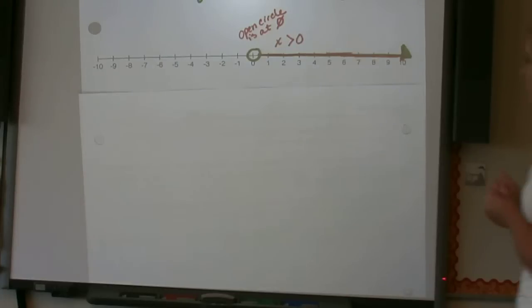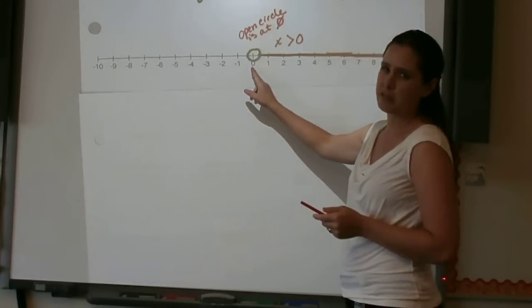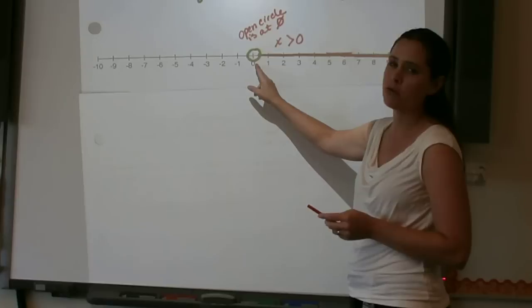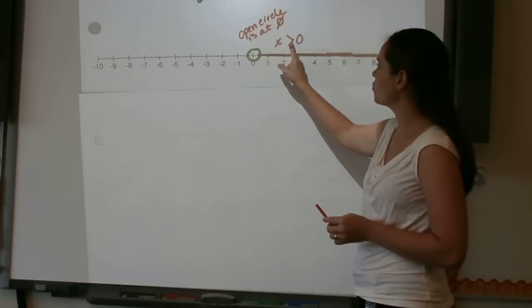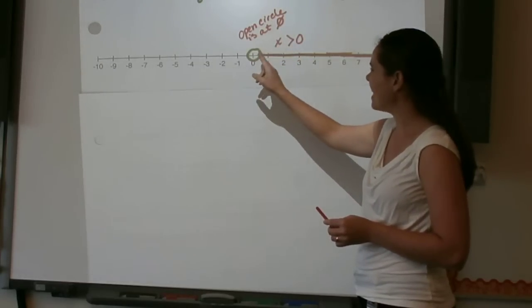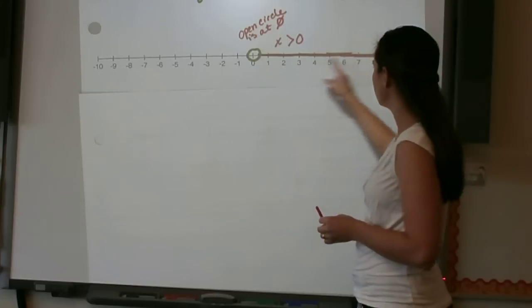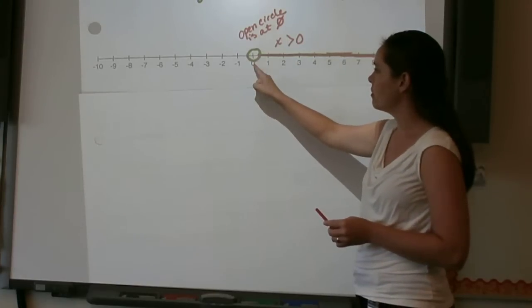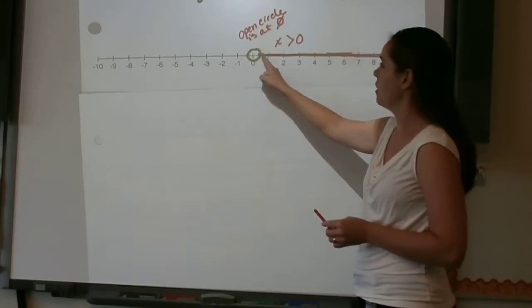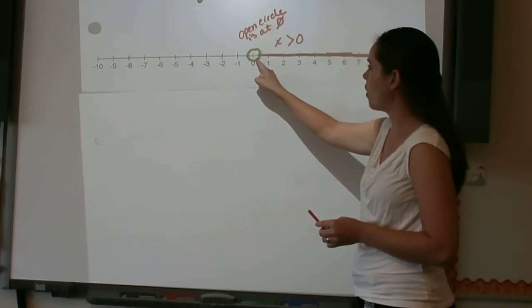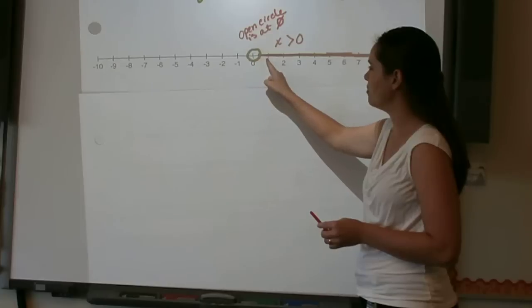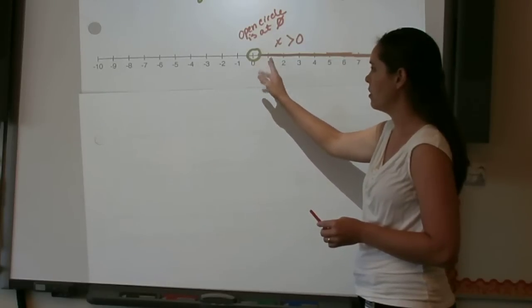And the reason we're going to put our mark on zero is because even 0.001 is a greater number than zero. So by saying x is greater than zero, we're saying that any number on this number line that is greater than zero. So we're going to circle the zero so that we include all of the numbers in between our whole number one.